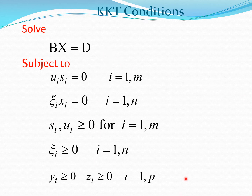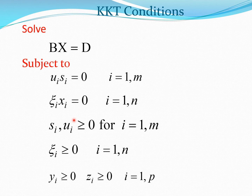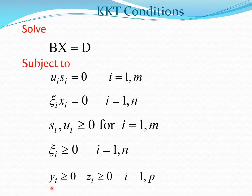The entire QP problem expressed in terms of KKT conditions requires solving B times X equals D subject to: the switching conditions, the slack variable and Lagrange multiplier U being greater than or equal to zero for inequality-type constraints, xi being greater than or equal to zero as a slack variable, and the Lagrange multiplier for the equality constraint having been split into two parts both greater than or equal to zero. This full set of equations and conditions must all be solved to get a point satisfying the KKT conditions for the QP problem.